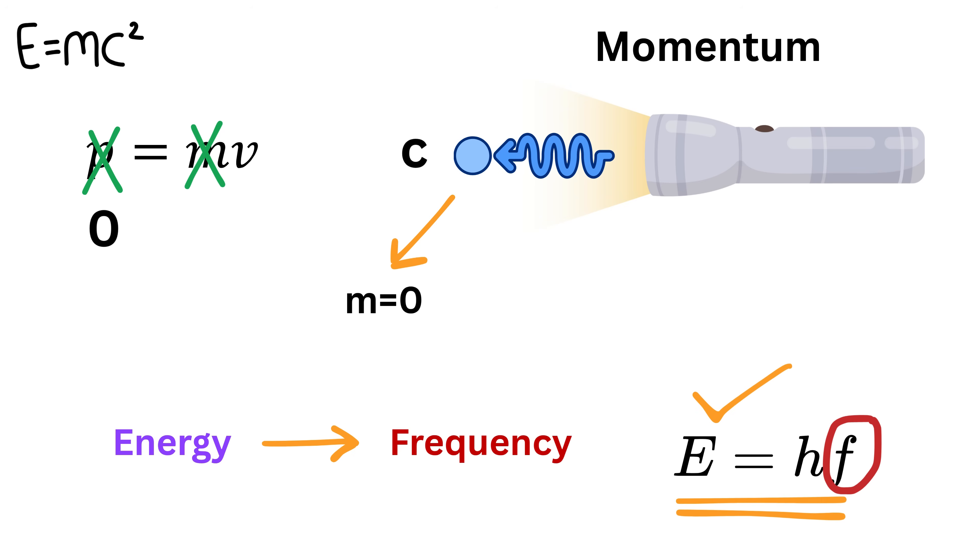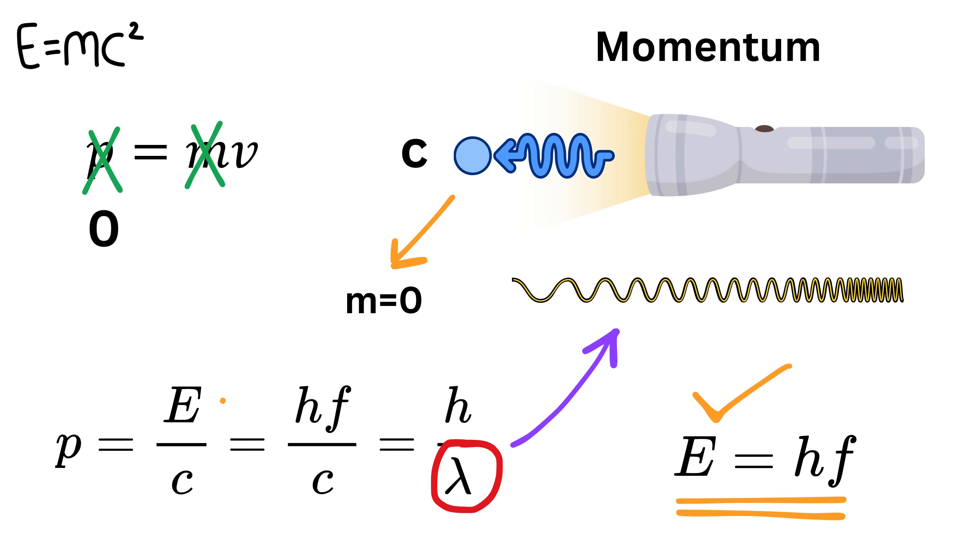As for momentum, quantum physics gives us a new way to calculate it. The momentum p of a photon is equal to its energy divided by the speed of light. Since energy itself is h times f, we can also say that p equals h divided by lambda, where lambda is the wavelength of the object.